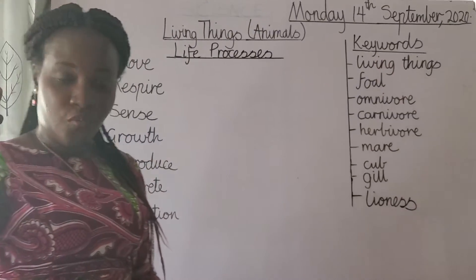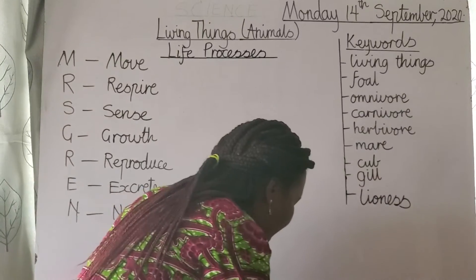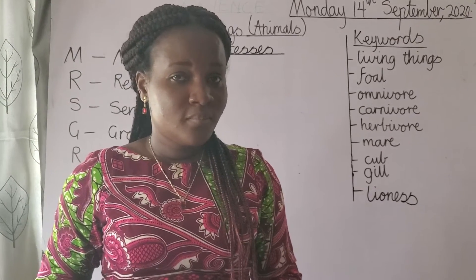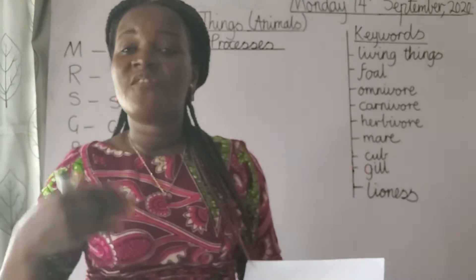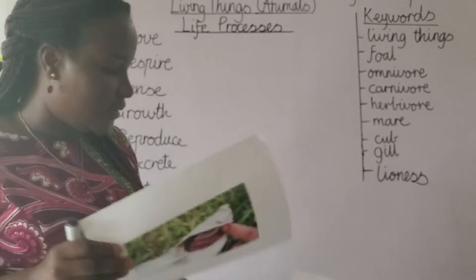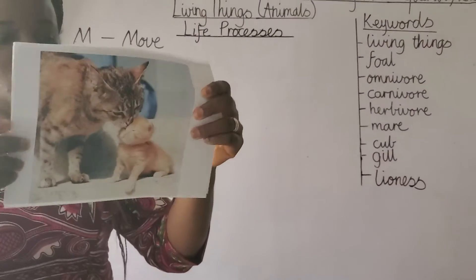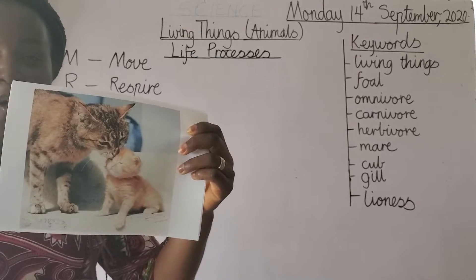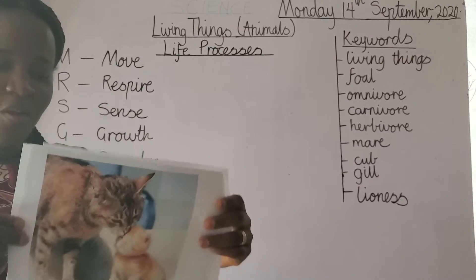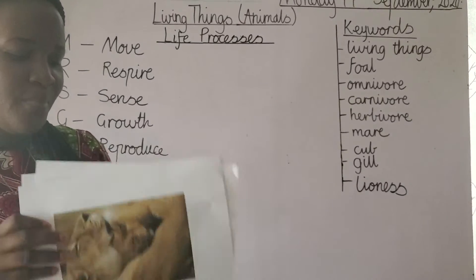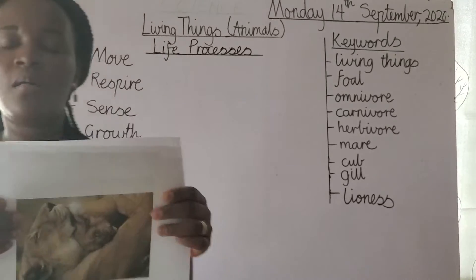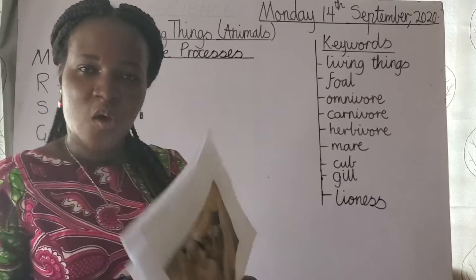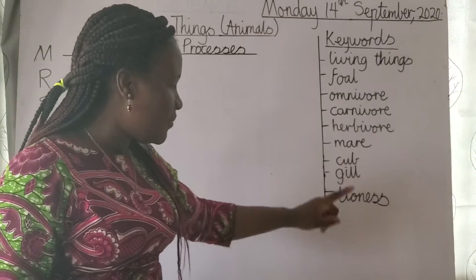Animals reproduce — do you remember what reproduce means? They give birth and produce their own young. Here we have a picture of a cat with its little one. A baby cat is called a kitten — say after me: kitten. We also have a picture of a lioness — a female lion is called a lioness. The baby lion is called a cub.